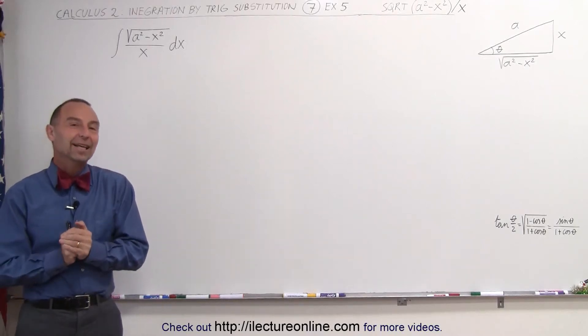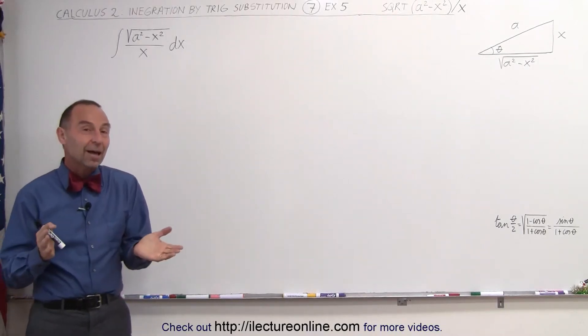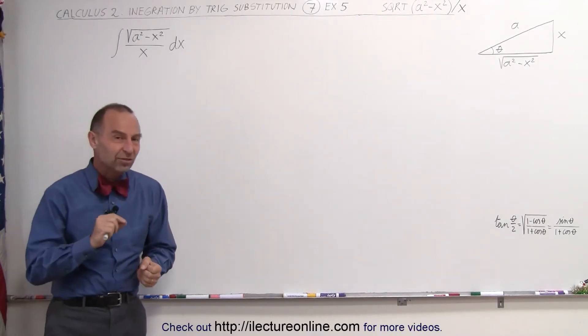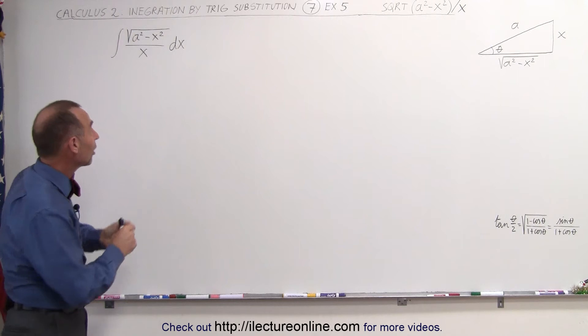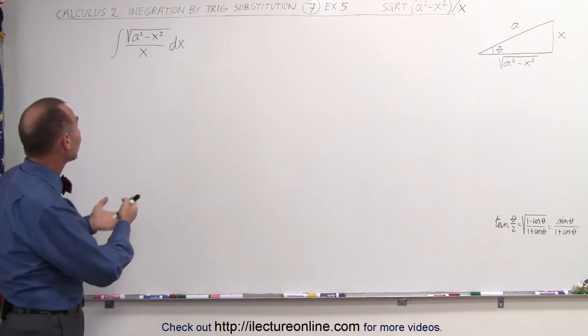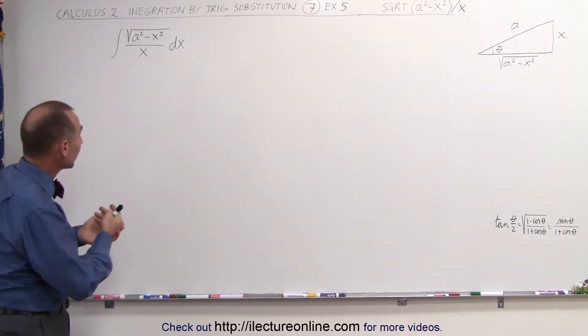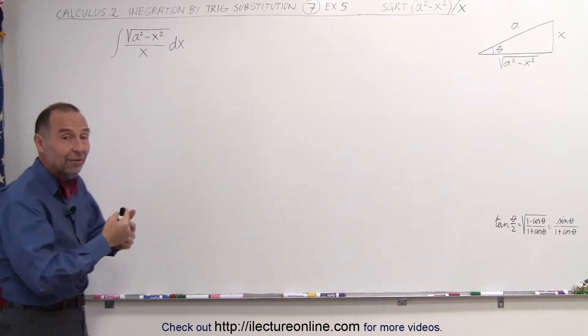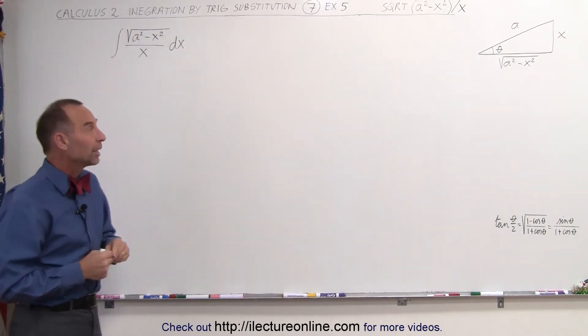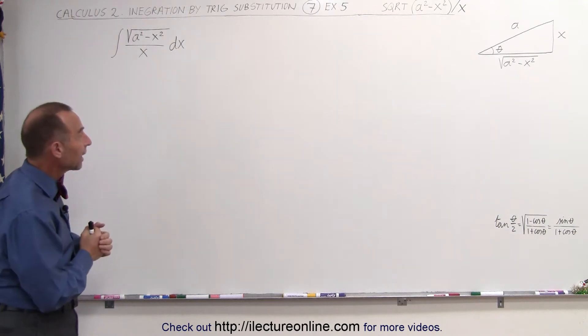Welcome to Electron Line. Here we have our next example of how to use trig substitution to solve an integral. We have the square root of a squared minus x squared, and we have an x in the denominator as well, divided by x.